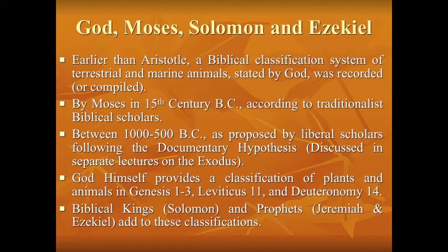What's interesting is that God himself, speaking in the first person, talks about the larger groups of created animals. In Leviticus 11 and Deuteronomy 14, God is not merely telling Moses — he is dictating in the first person. He identifies the major groups of animals and then specifies which individual animals belong to each major group.